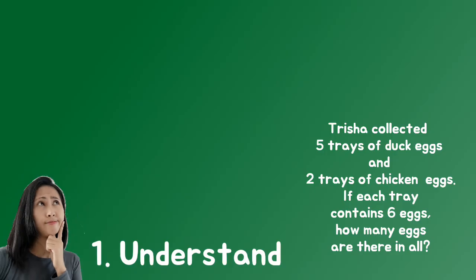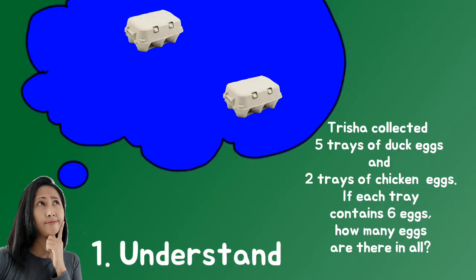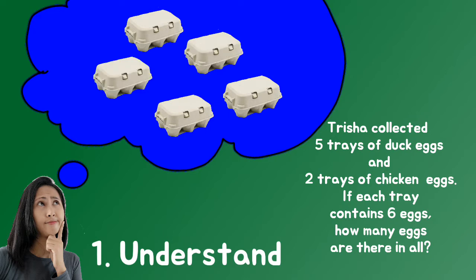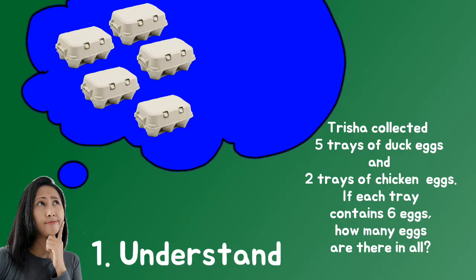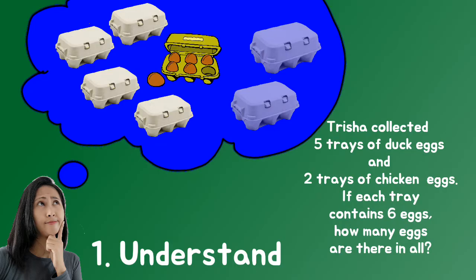To solve this, we have to understand the problem. Visualize or picture out what is in the problem. Trisha collected five trays of duck eggs and two trays of chicken eggs. If each tray contains six eggs, how many eggs are there in all?